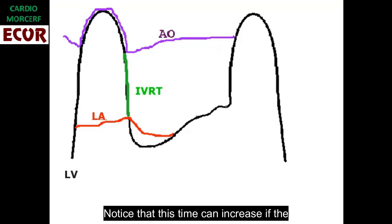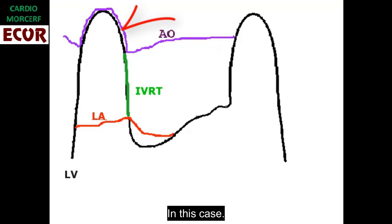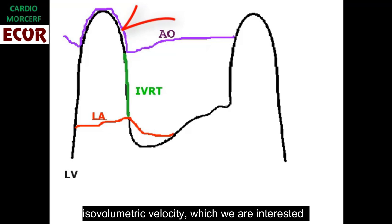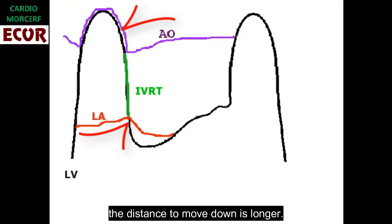Notice that this time can increase if the blood pressure is higher, and the aortic valve will close in here, for instance. In this case, although the patient had the same isovolumetric velocity, which we are interested in, the time will be prolonged since the distance to move down is longer.